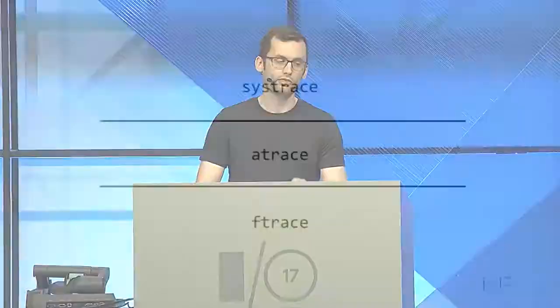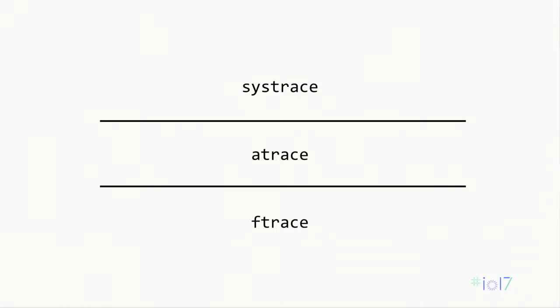SysTrace is three components. At the bottom is Ftrace — a Linux kernel feature that allows the kernel and user space to write event information into a central buffer. Basically, you can get a journal of any event that happened on the system. The kernel will tell us things like: this process started running on this CPU, or the clock changed on this CPU.